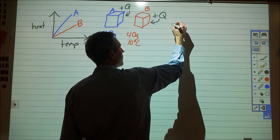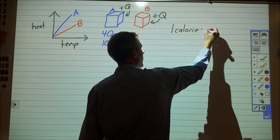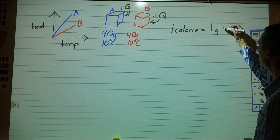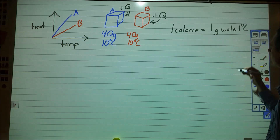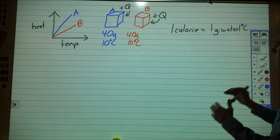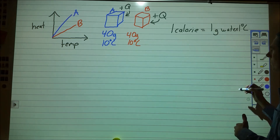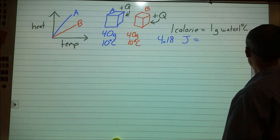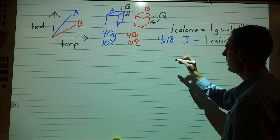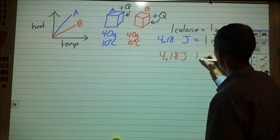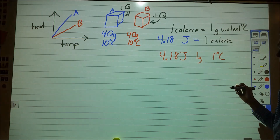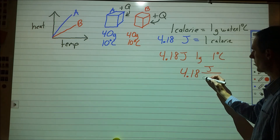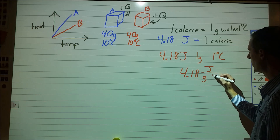You may have heard of a thing called a calorie. A calorie is the American unit for energy, and it's defined as the amount of energy needed to heat up one gram of water one degree Celsius. But we're not going to use that in chemistry class — we're going to use a joule. There are 4.18 joules for every one calorie, which means that if we put 4.18 joules into one gram of water, it would change temperature by one degree. So that turns into a constant for water: 4.18 joules per one gram causes a one degree Celsius temperature change.